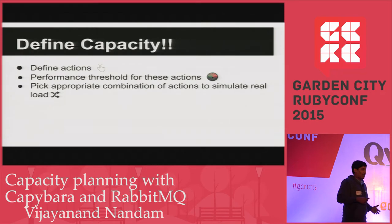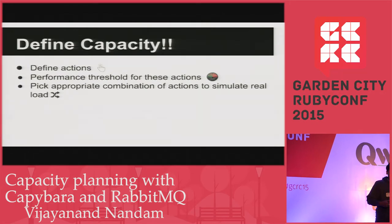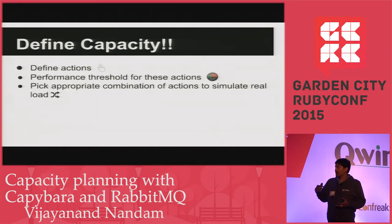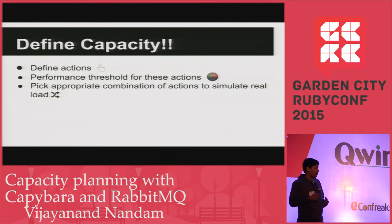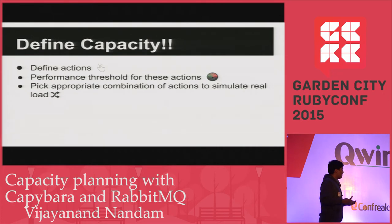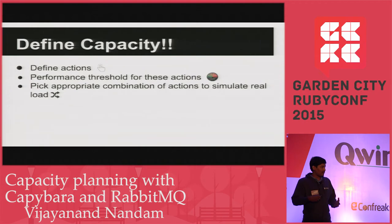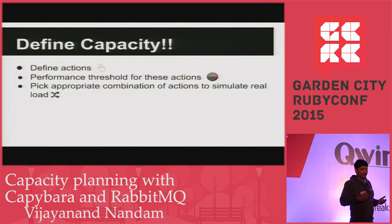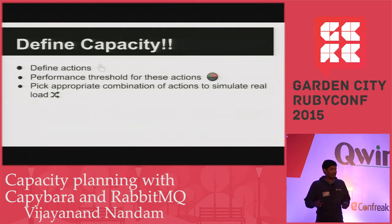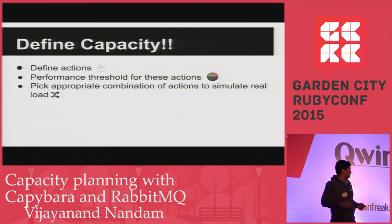Before you go on planning your capacity, you have to define what your actions are. Each action will contain a couple of user actions, like visiting a page, adding items to a cart, or clicking buttons that generate more page views. For each action, you need to define the performance threshold, like it should be completed within 10 or 20 seconds.